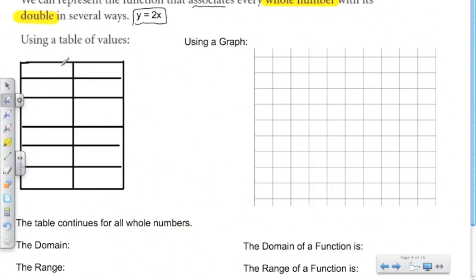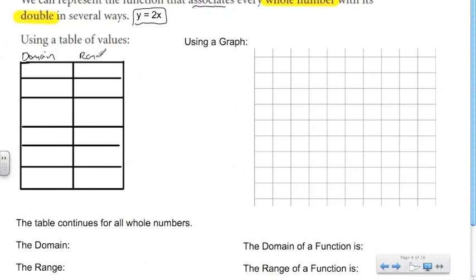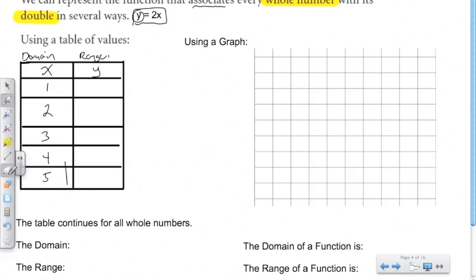They're asking us to use a table of values to list the domain and the range. On the left we always put our domain when doing a table of values, and on the right is going to be our range. X is nearly always the domain, and y is nearly always the range. If x is any whole number, I can pick a whole bunch — we'll start with 1 and go 2, 3, 4, 5, sticking with 1 to 5.